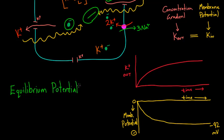So let me just write that out for K is negative 92. And again, this is assuming that the cell is only permeable to one thing, which is potassium.